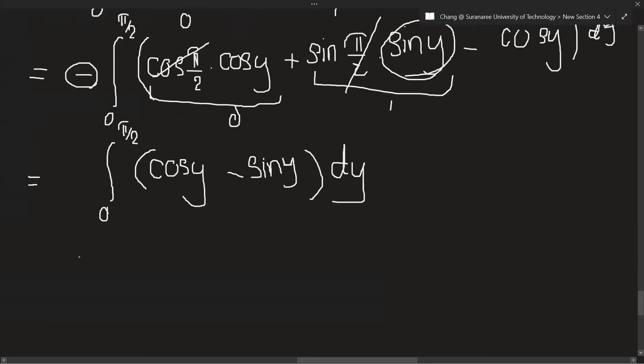Okay, so let's integrate. When we integrate plus 1, we will get y. When we integrate sin, we will get minus cos. So minus and plus, minus and minus is plus. Plus cos y and the value of y ranges from 0 to pi over 2.